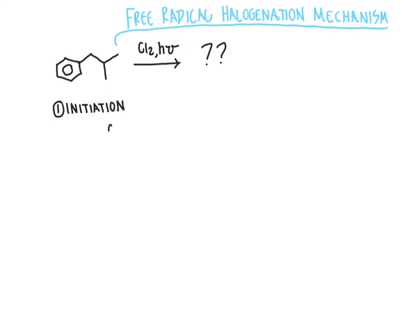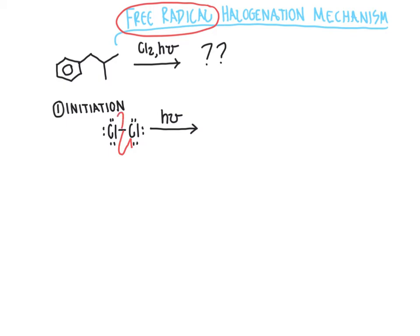The first step of the mechanism for any free radical halogenation is what we call initiation. Due to the light and heat present, the weak bond linking the two chlorine atoms breaks. Using single-headed arrows — because free radical reactions differ from most reactions in that we indicate movement of one electron, not pairs — the light and heat causes homolytic bond breakage. Both chlorine atoms each receive one electron, yielding two chlorine radicals.